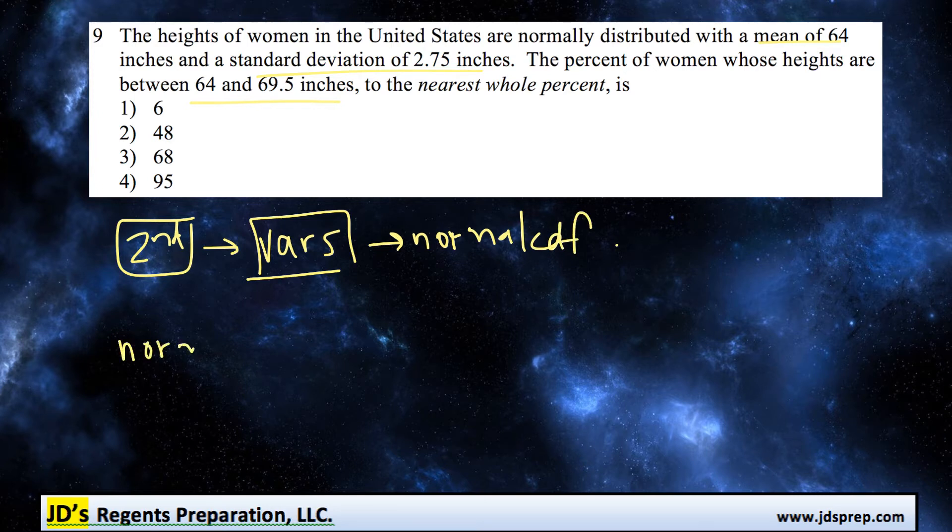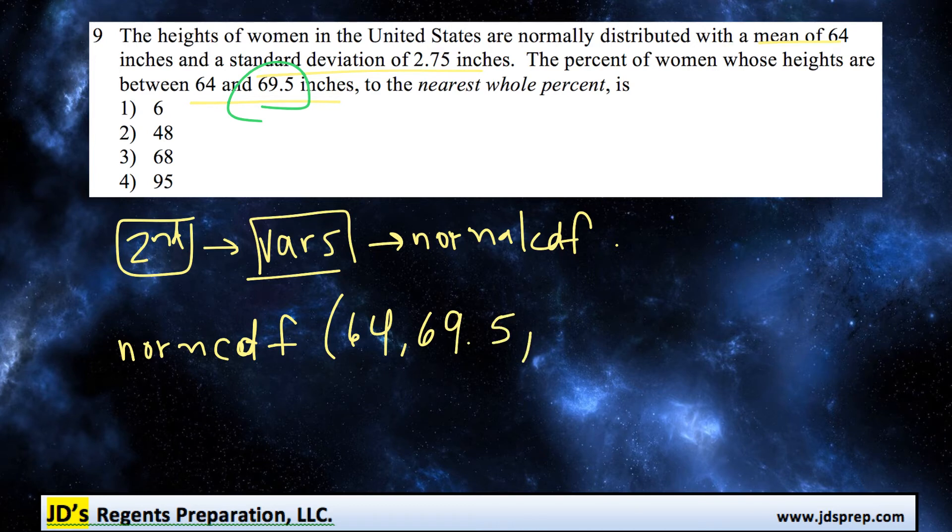With that chosen, you're going to input four numbers into the brackets. The first thing is our lower bound which is 64, and then we input our upper bound 69.5. After that we have to put in the mean which happens to also be 64, and then the last thing we input is the standard deviation, in this case 2.75.